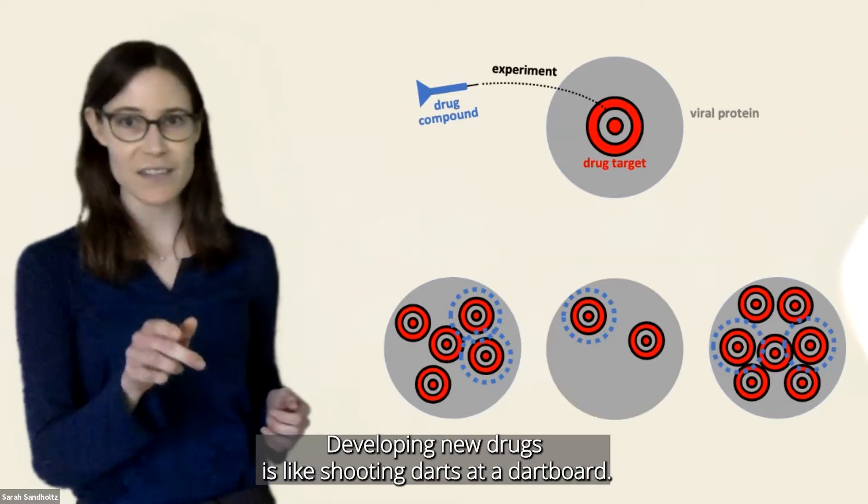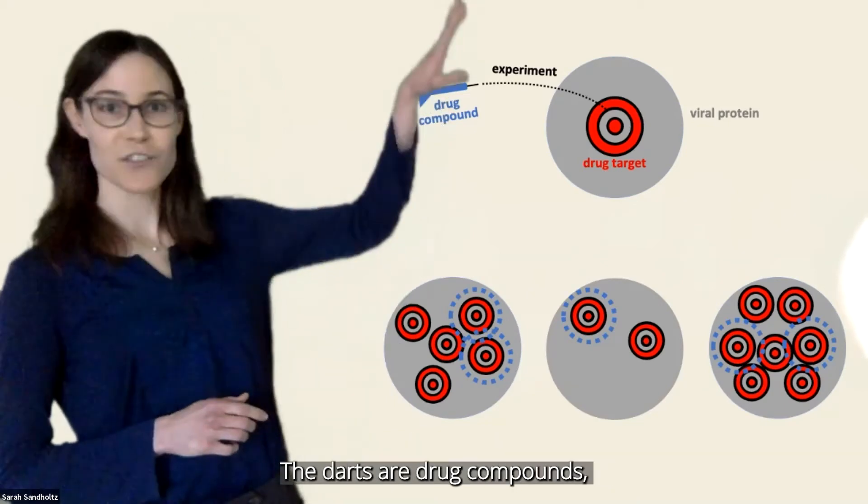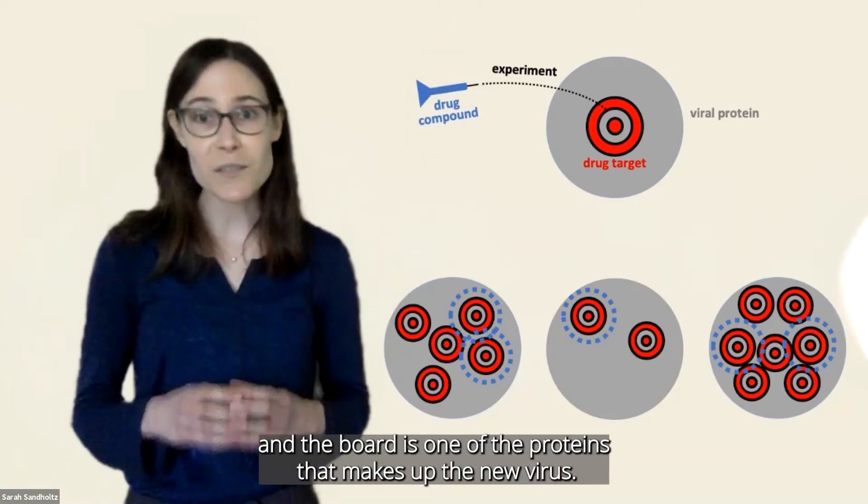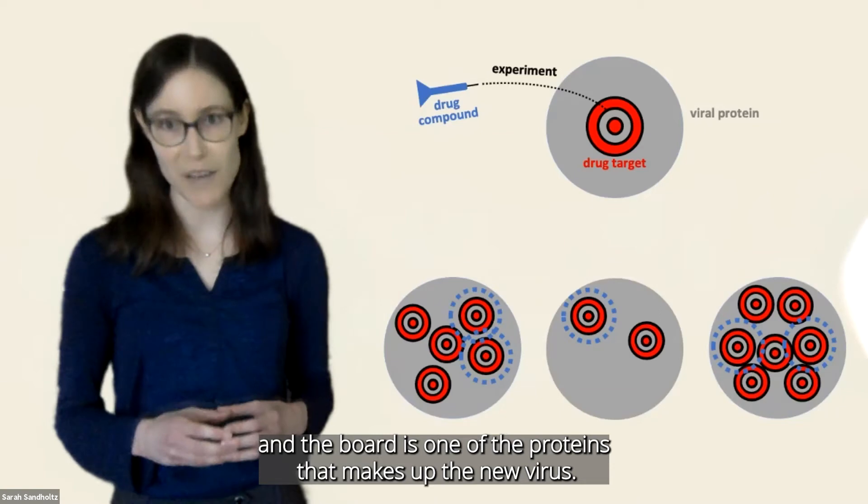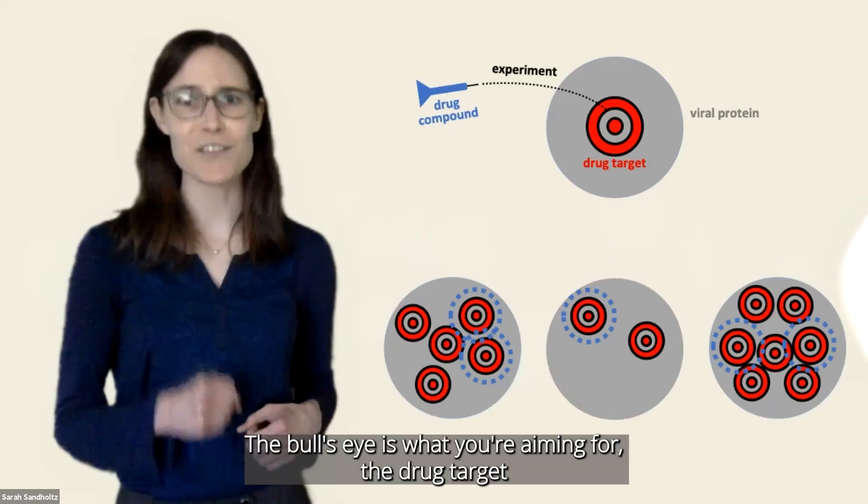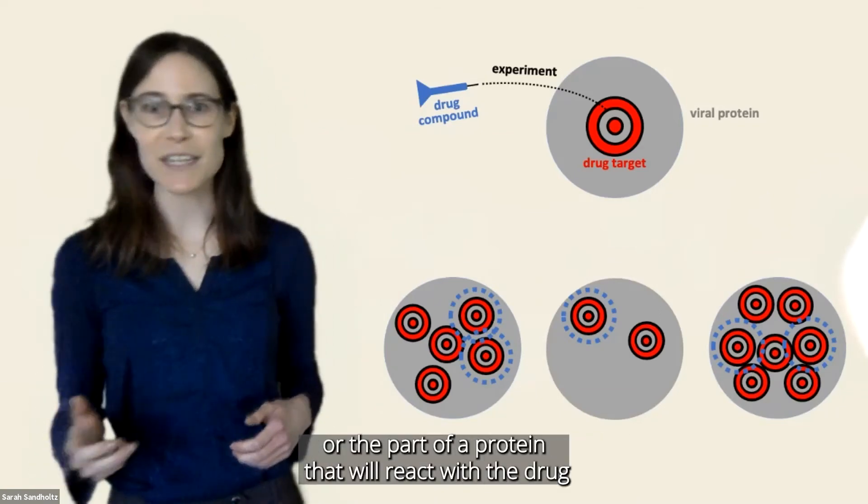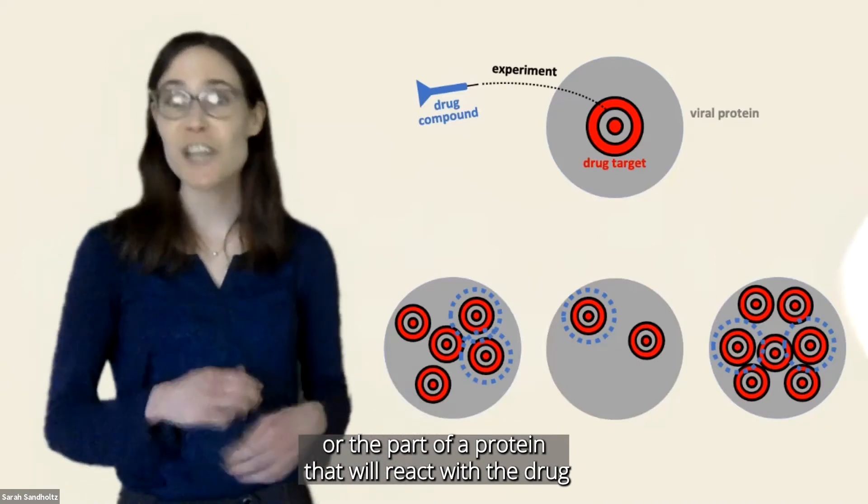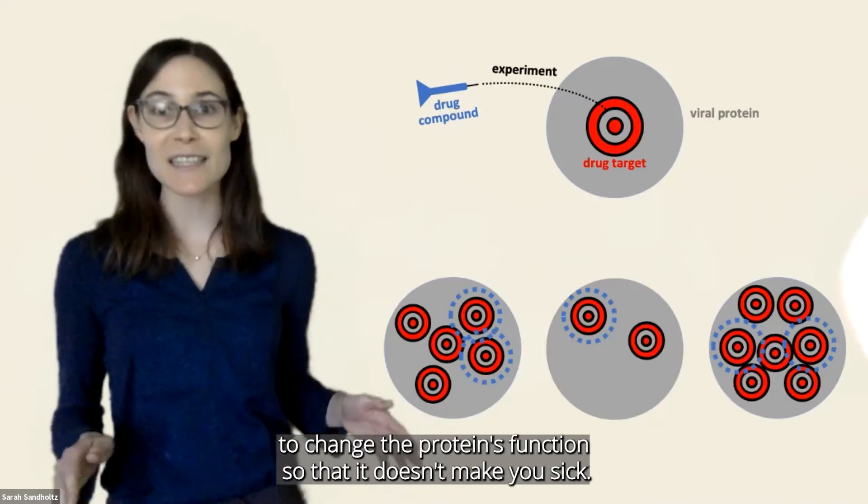Developing new drugs is like shooting darts at a dartboard. The darts are drug compounds, and the board is one of the proteins that makes up the new virus. The bullseye is what you're aiming for, the drug target, or the part of the protein that will react with the drug to change the protein's function so that it doesn't make you sick.